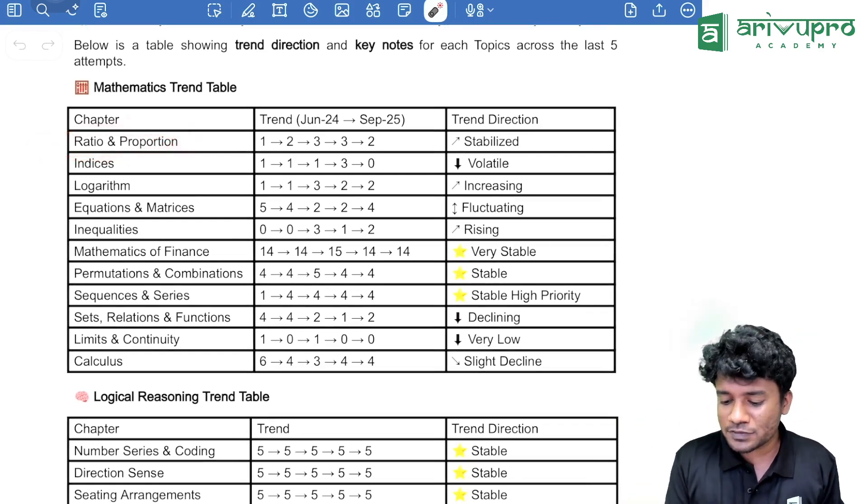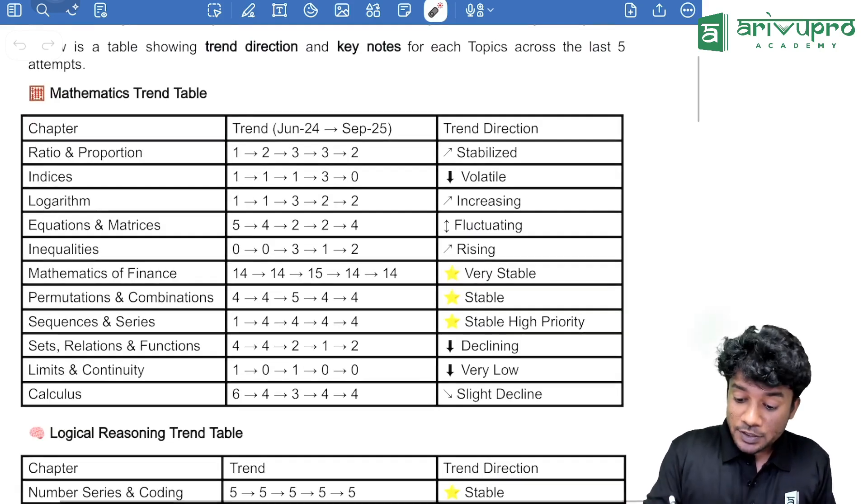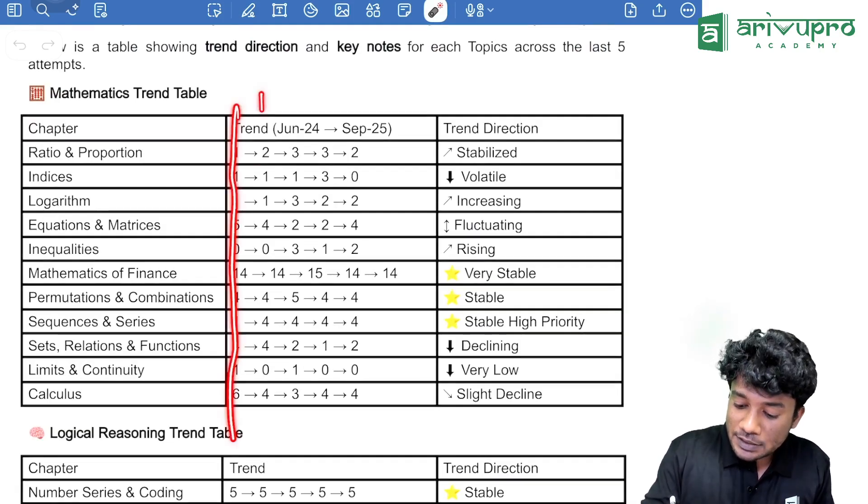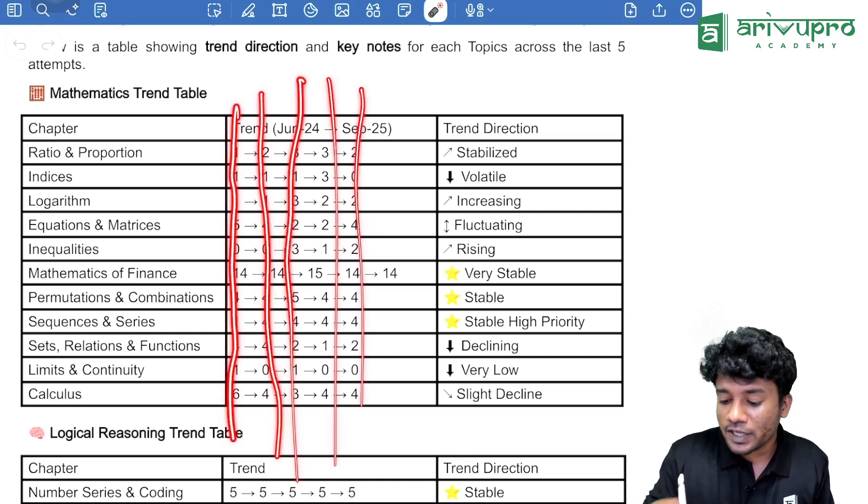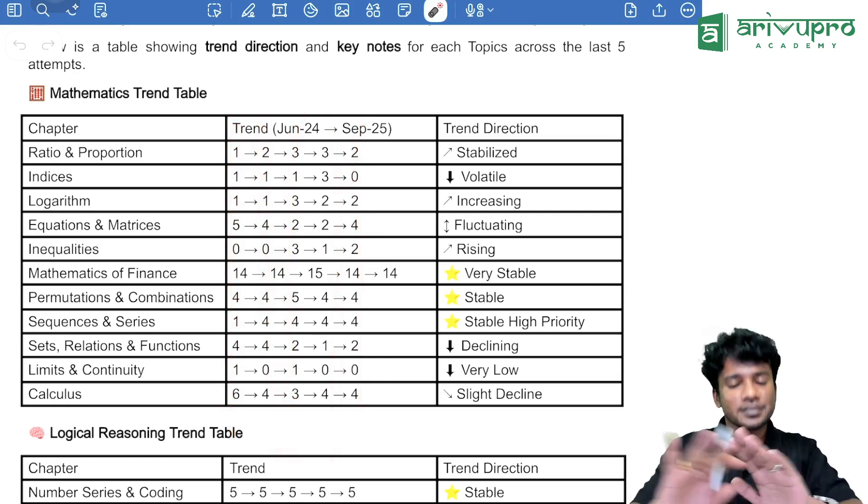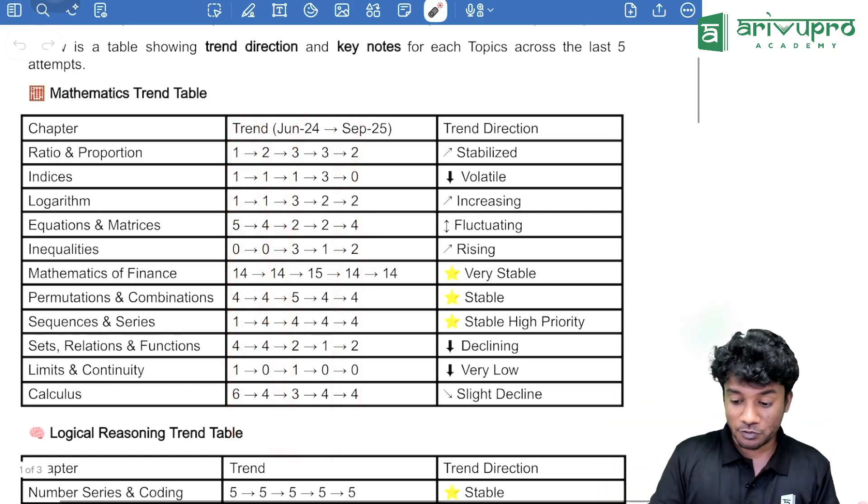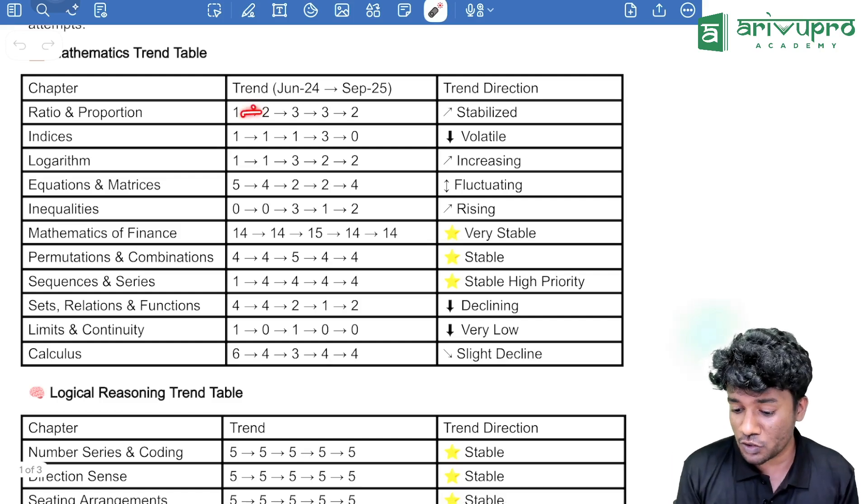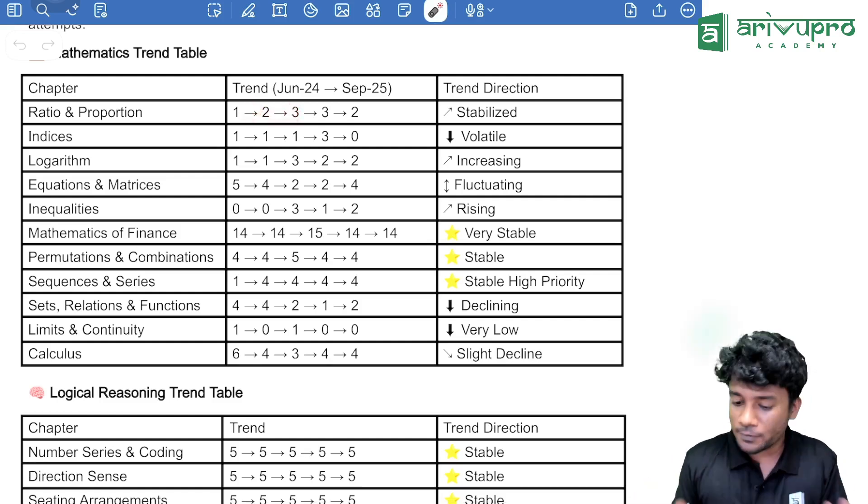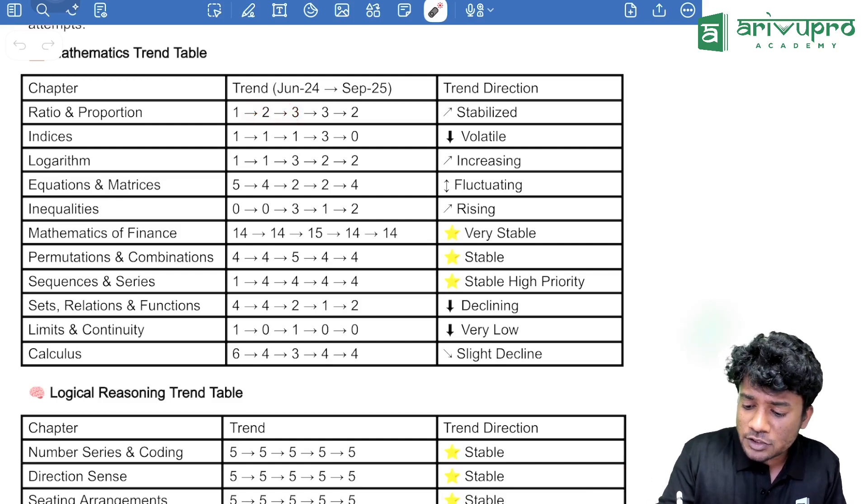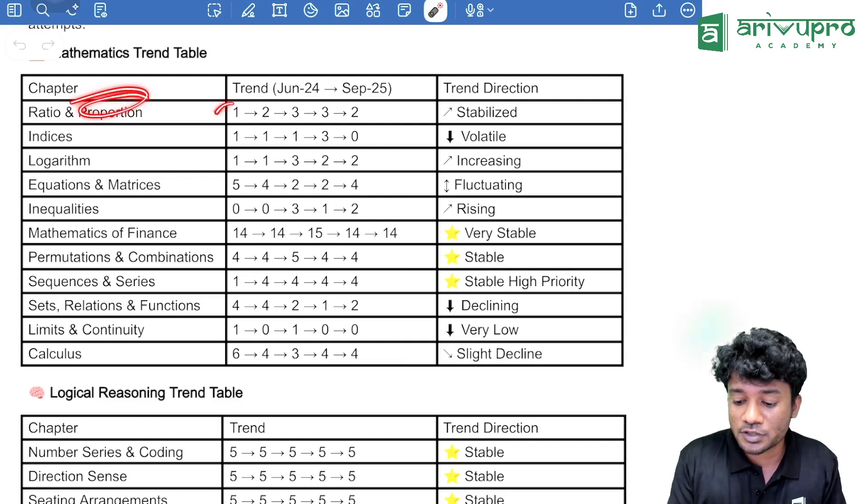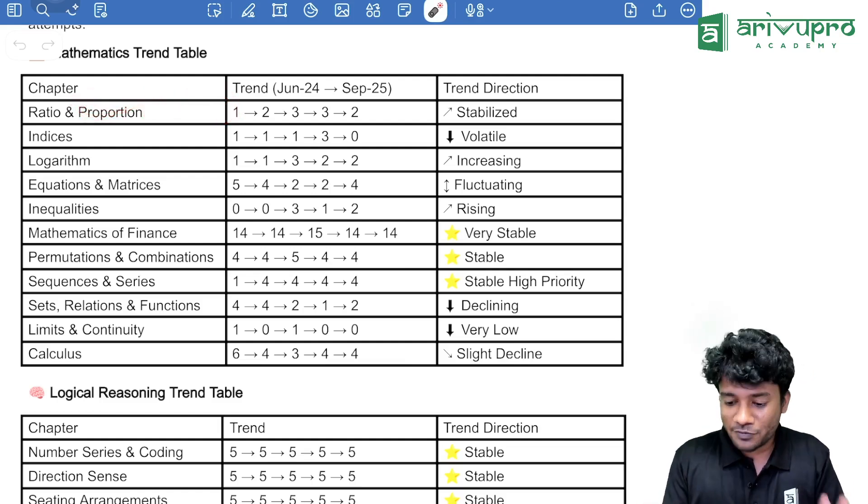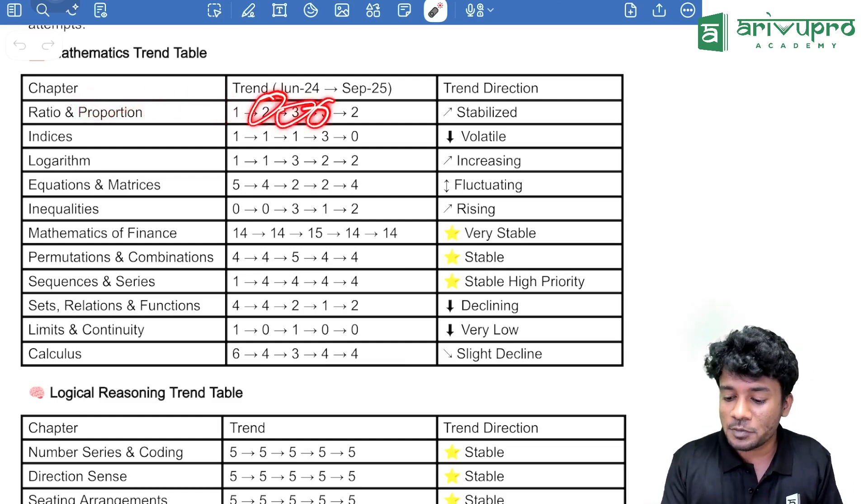Going to the topic, ratios and proportions, you have seen a trend of 1, 2, 3, 3 and 2. The first one is based on June 24, then there is September 24, then Jan 25, May 25 and finally September 25. This is the distribution of marks which is shown with a trend line over here. Coming to the entire June 24 attempt, we can see that in ratio proportion, it was just 1 mark and the trend went 2 marks, 3 marks, 3 marks and 2 marks.